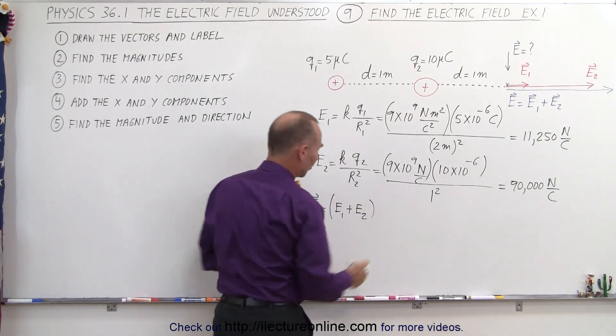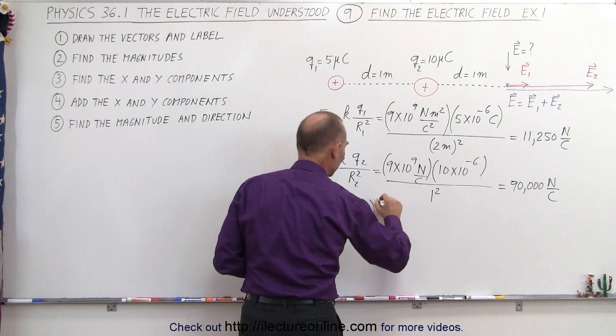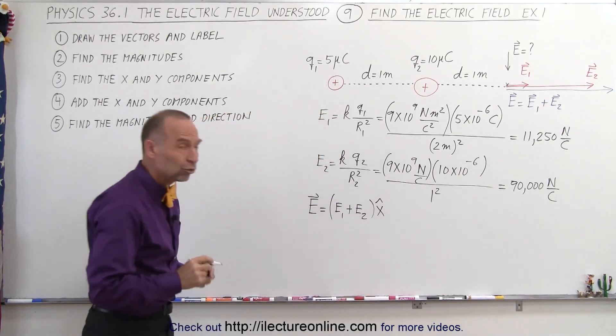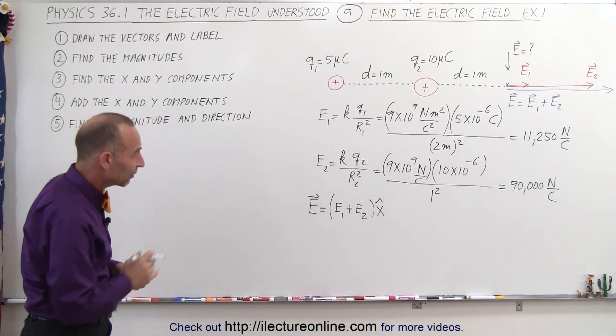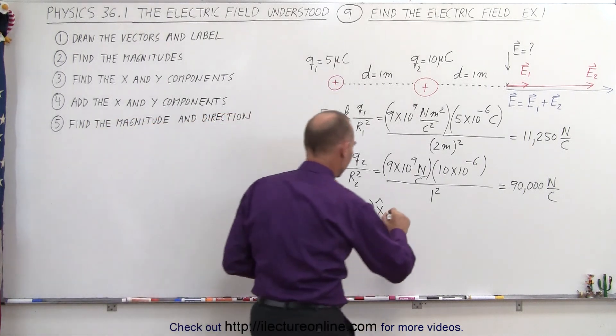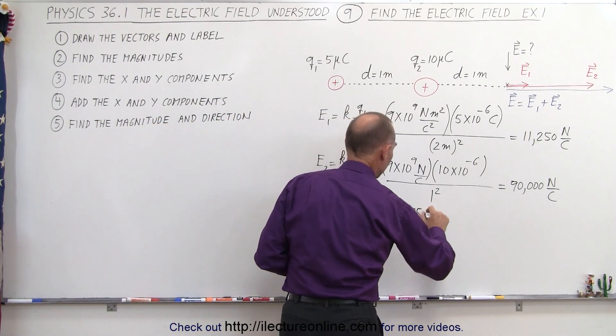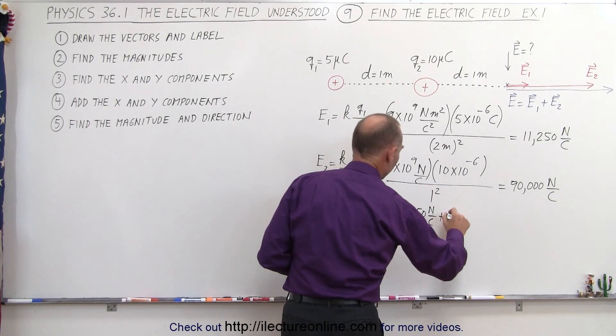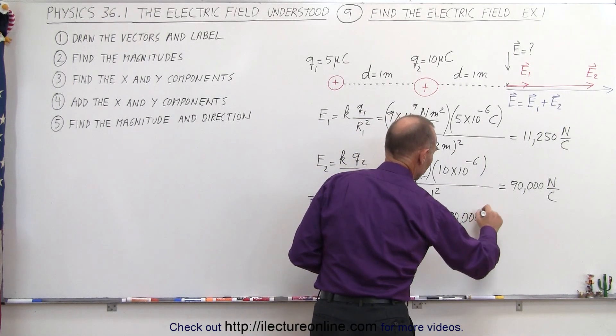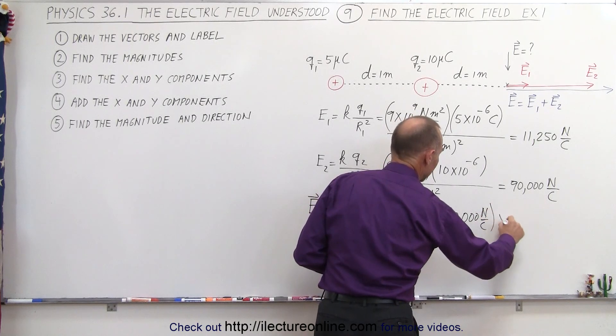And we put down the x unit vector indicating it is in positive x direction. So this is equal to 11,250 newtons per coulomb plus 90,000 newtons per coulomb in the x direction.